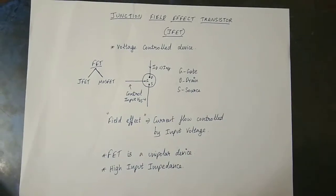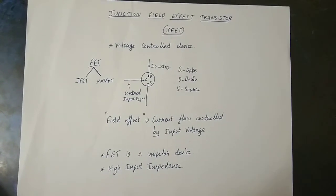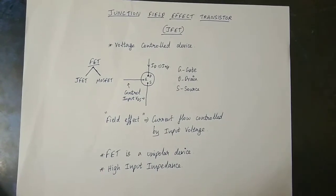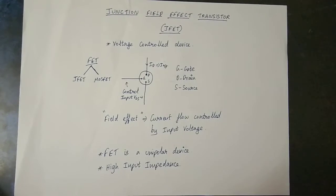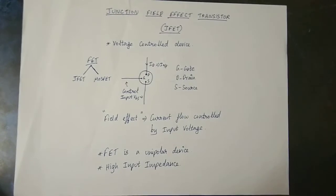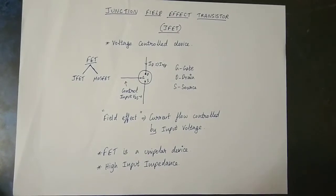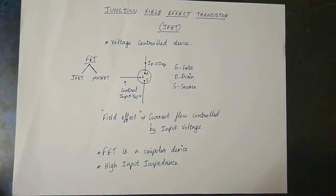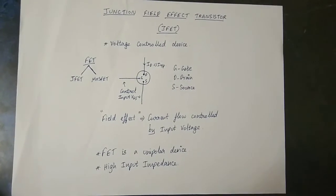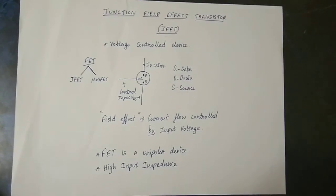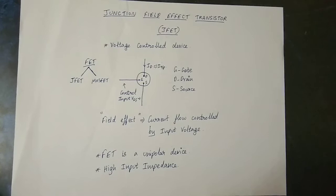Hi Friends! Let's talk about JFET, the second type of transistor. There are two types of transistors: BJT and JFET. JFET stands for Junction Field Effect Transistor — this is the full expression.